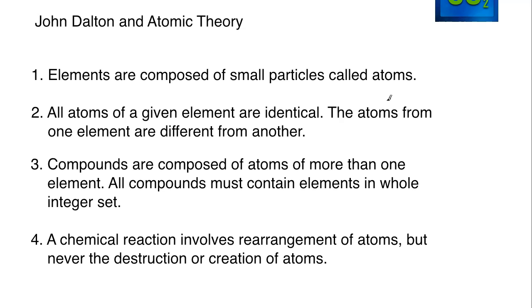There are four points that John Dalton outlined. First, elements are composed of small particles called atoms. Second, all atoms of a given element are identical. The atoms from one element are different from another. If we look at the periodic table, hydrogen is different from helium, different from carbon, different from iron. The structure of the atoms, the protons, the electrons, the way those are configured are going to be unique and different from any other element on the table.